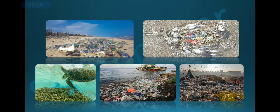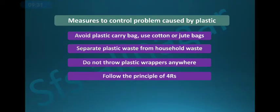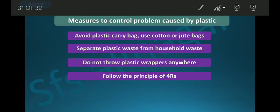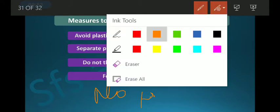So those are the main problems caused by plastic. What are some measures to control these problems? One thing is that we cannot totally say no to plastic — we cannot completely ban or completely avoid it. But we can limit its use.